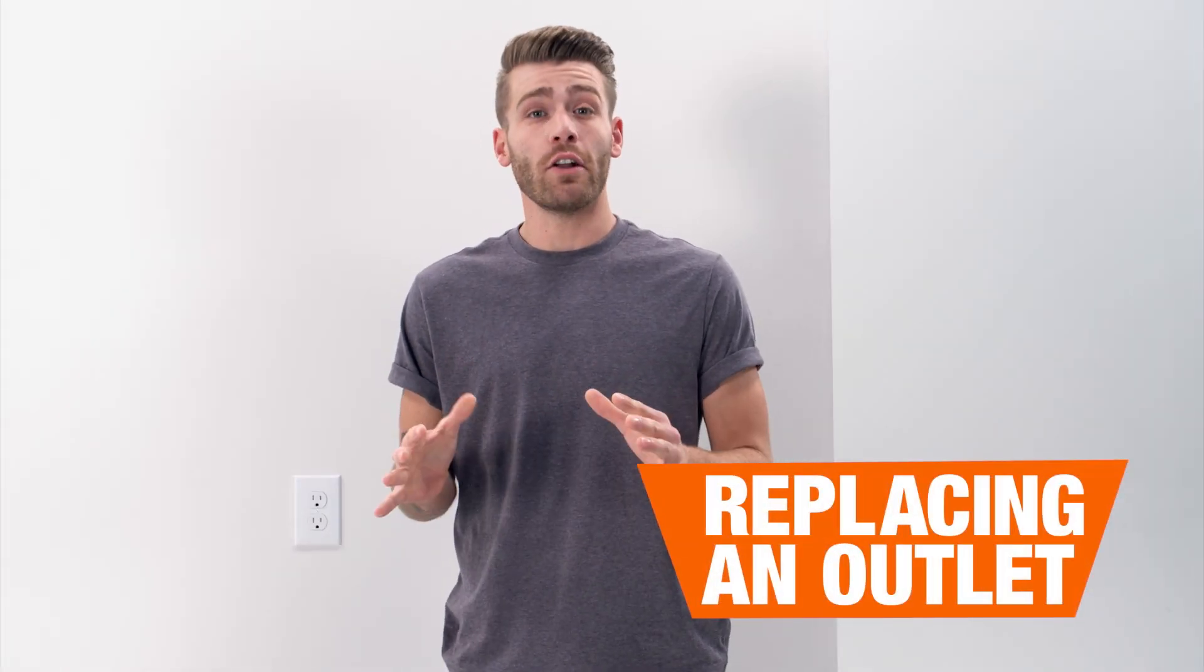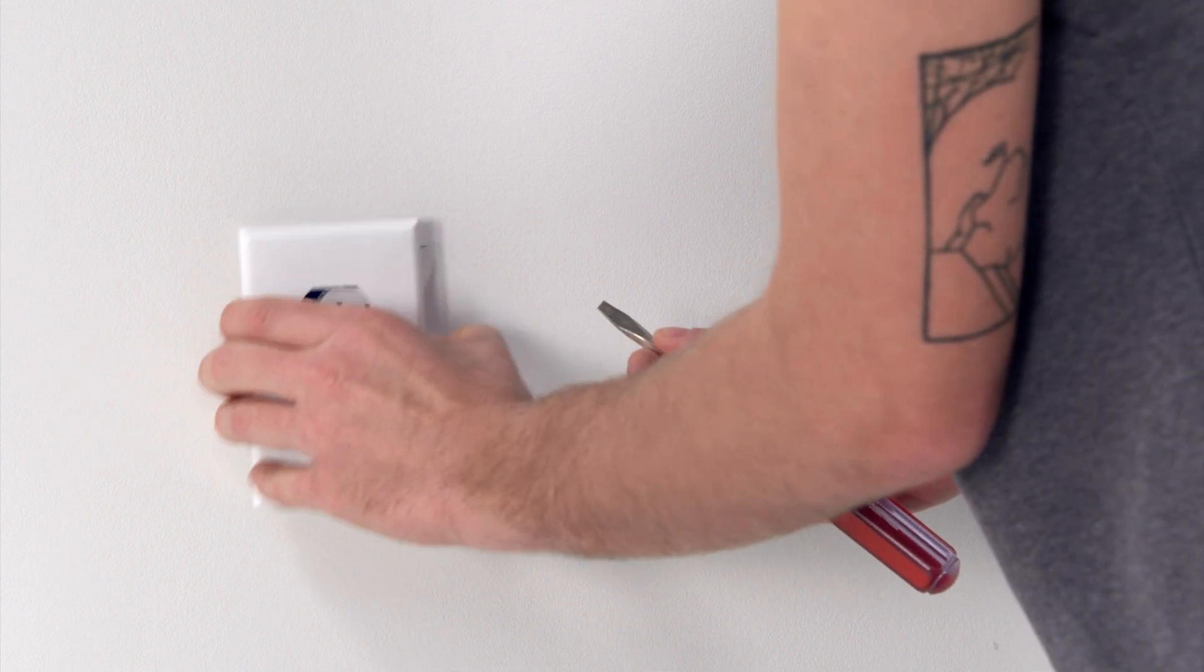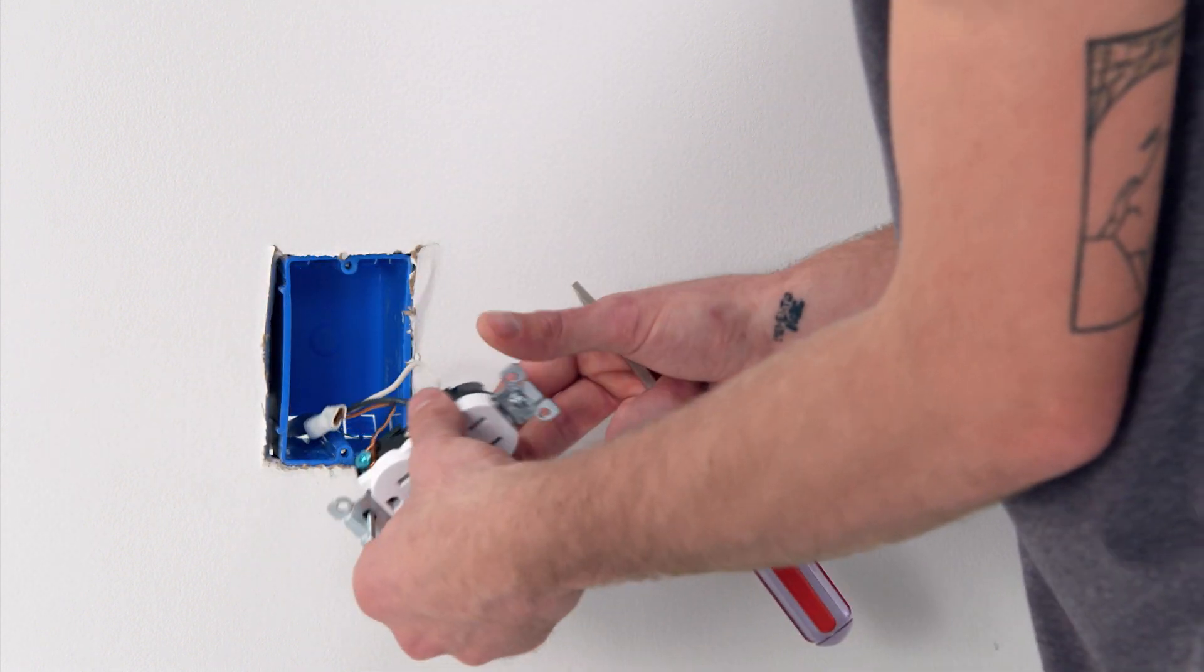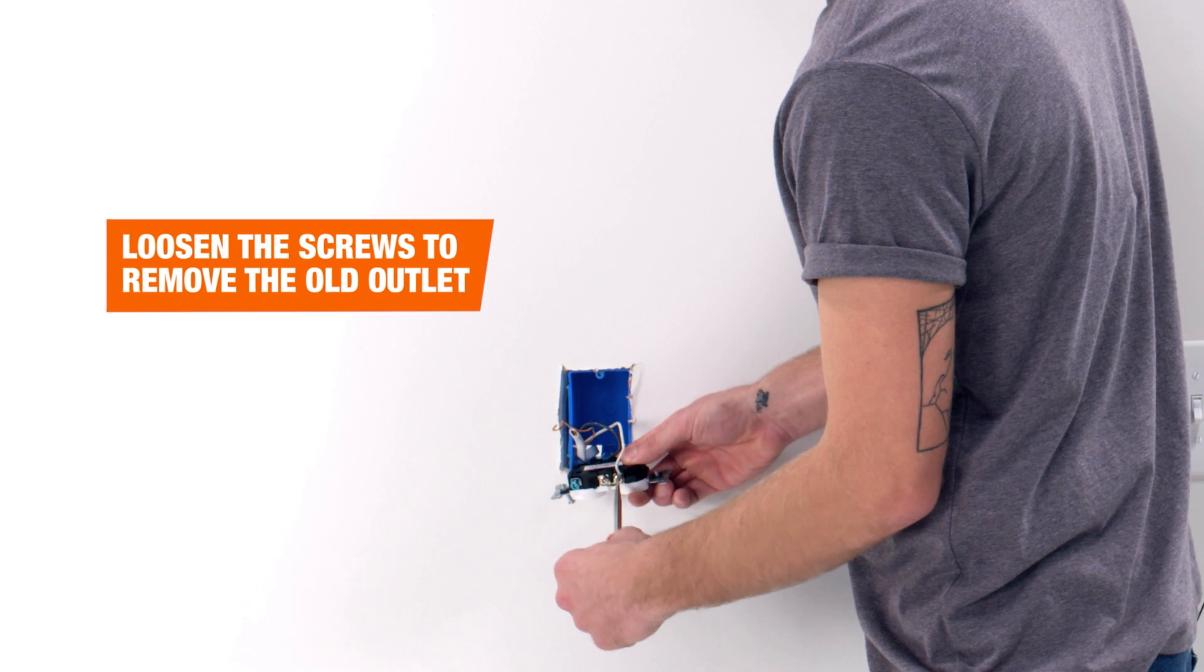Replacing an old outlet is simple. Take note of where the original wires are running because we're basically matching what's already there. Also, keep your instructions handy in case you hit a snag along the way.